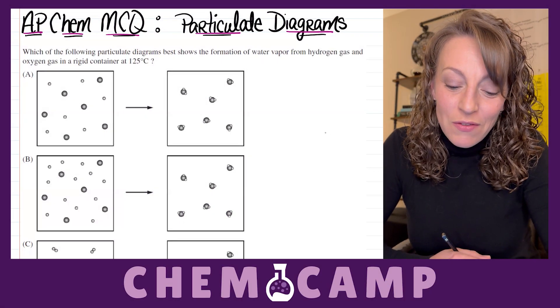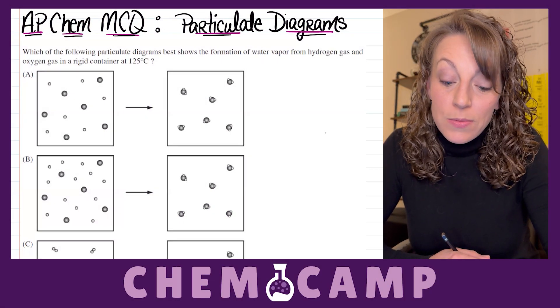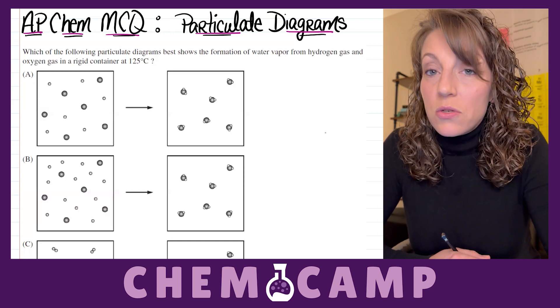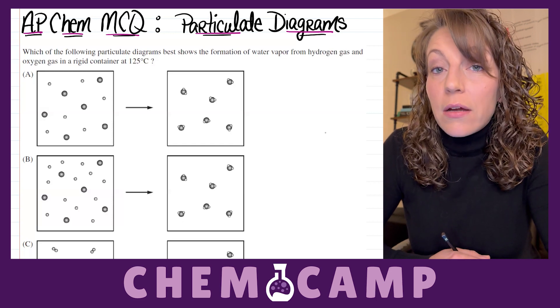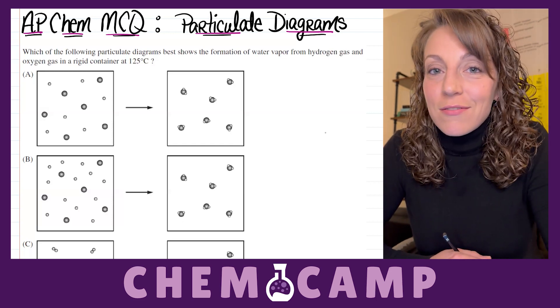The problem reads, which of the following particulate diagrams best shows the formation of water vapor from hydrogen gas and oxygen gas in a rigid container at 125 degrees Celsius?